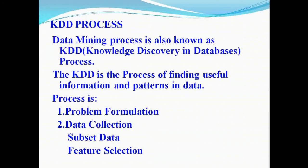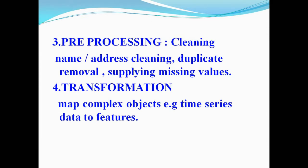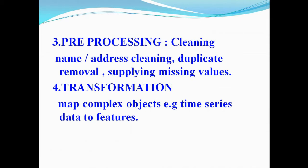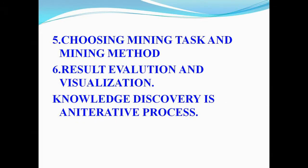It checks whether the hotel at that location is available or not, or whether the famous food is available. It collects and selects that information. Then cleaning happens based on location name or address — removing duplicates, supplying missing values. Transformation then collects related records based on data to features, and the mining method extracts the result for the user.